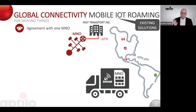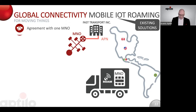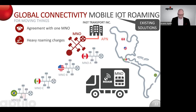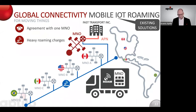If we first look at how they would do this typically today with existing solutions, they would have an APM to their mobile operator, and they have this agreement with one mobile operator. They would probably have roaming charges that are quite heavy between many countries to enable connectivity between countries like this.